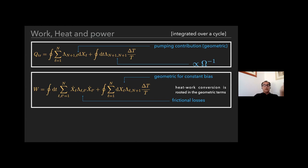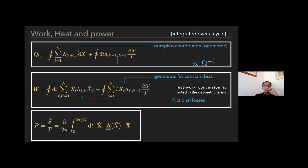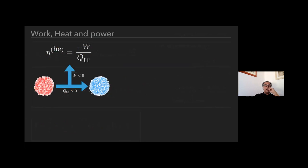It will be proportional to omega, to the inverse of the period. The heat-to-work conversion will be rooted in these geometric terms. The work—the first term of this x dot square—will be positive, so if you want to have a conversion into usable work, then it should happen that this second term becomes negative to compensate for the losses.